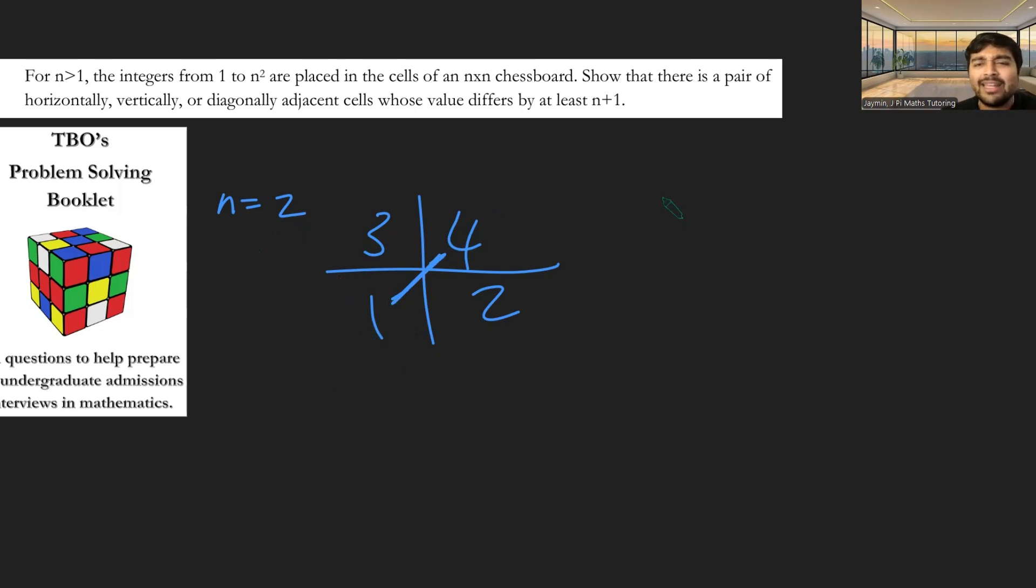And actually, I realize, hold on, any 2×2 grid will work, because wherever 1 is, 4 will have to be in one of the other squares. And according to this, this is considered adjacent. So in fact, that proves all 2×2 cases.